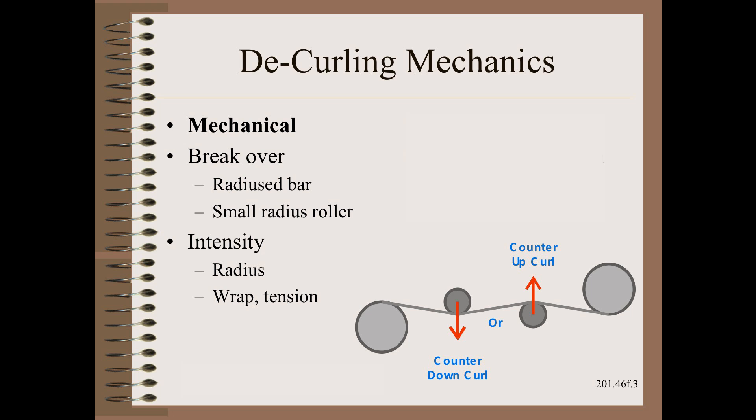The factors that affect decurling are easy to list, even if modeling is difficult. Most often the web is mechanically broken over a radius bar or very small diameter roller. The amount of decurling is extremely sensitive to the radius. In fact, just as we saw in roll set curl, it is sensitive to the ratio of web thickness to radius, which in this case is the radius of the bar or the roller.